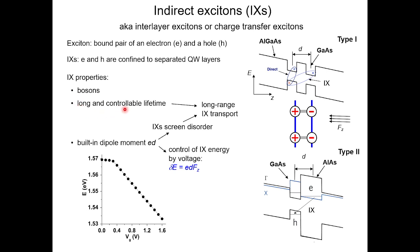Indirect excitons also have long and controllable lifetimes, which is very important. The electron and hole will want to recombine — just like matter and antimatter — and when they do, the excitation energy is turned into either a photon or a phonon, essentially heat, inside the material, and the exciton ceases to exist. For indirect excitons, because the electron and hole are further apart, it takes them longer to recombine. By adjusting the strength of the applied electric field, which causes the slanting in the energy diagram, we're able to actually control that lifetime.